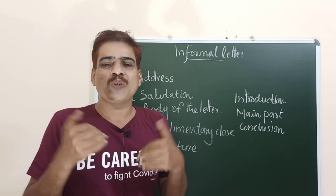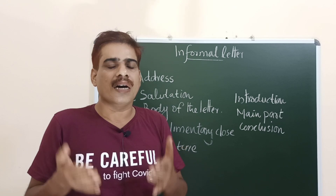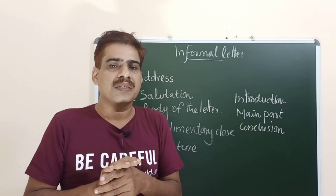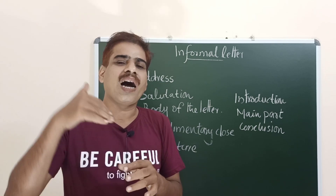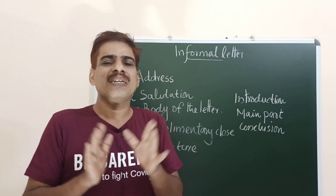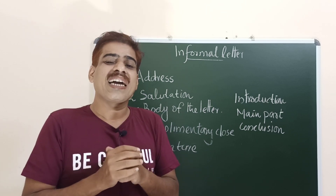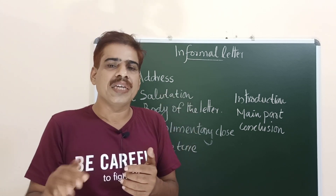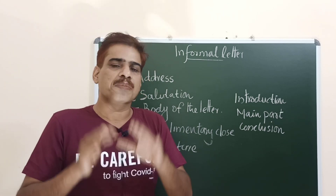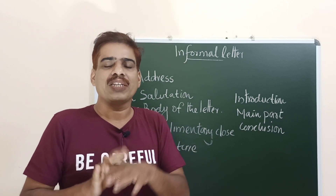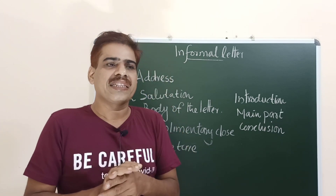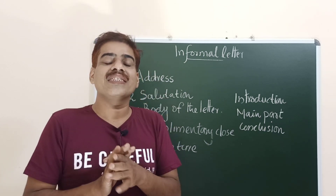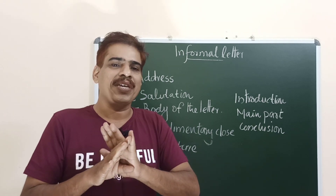Fifth is courtesy: we should respect our teachers, friends, and everyone we write to. Even in a formal letter, courtesy must be there because we should not be authoritative when writing to higher people. Next is consideration: even when writing an informal letter, we want to consider our reader — whether it is a father, mother, or friend. There must be consideration in your letter.